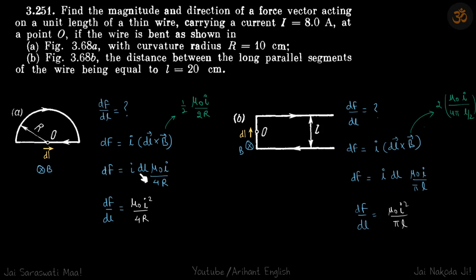So df is equal to i dl μ₀i by 4r. df by dl you will get from here: μ₀i² by 4r, which is our answer.